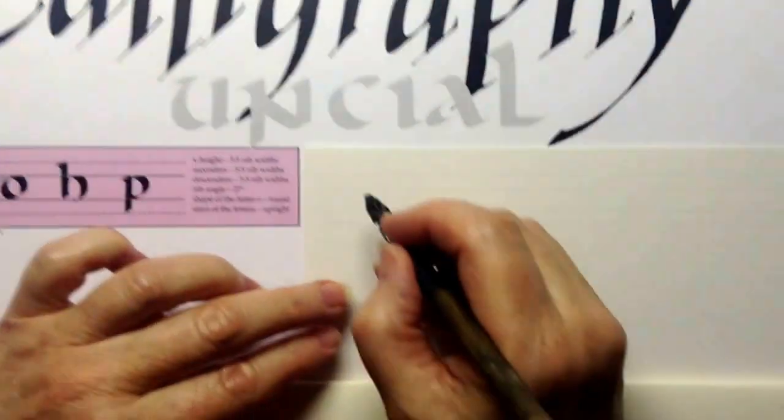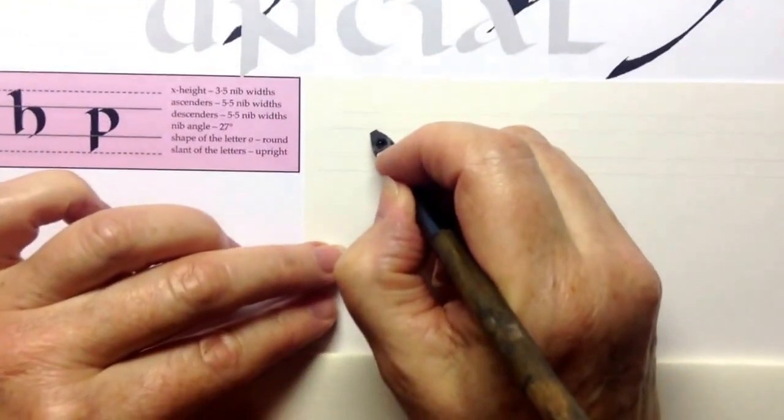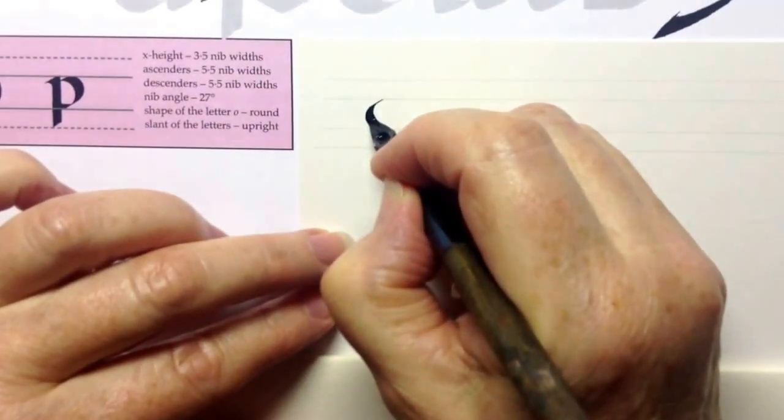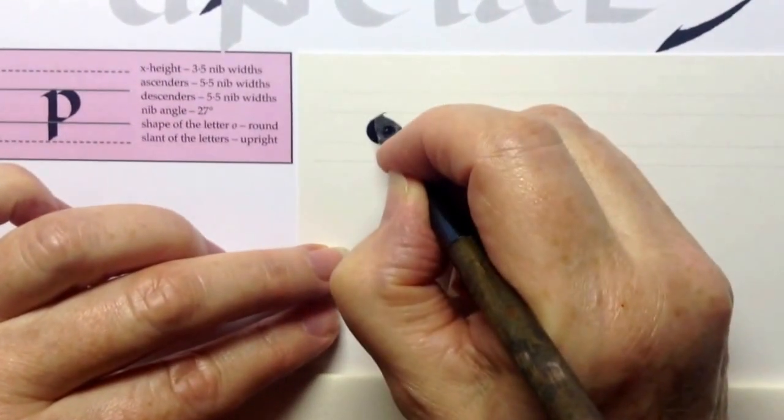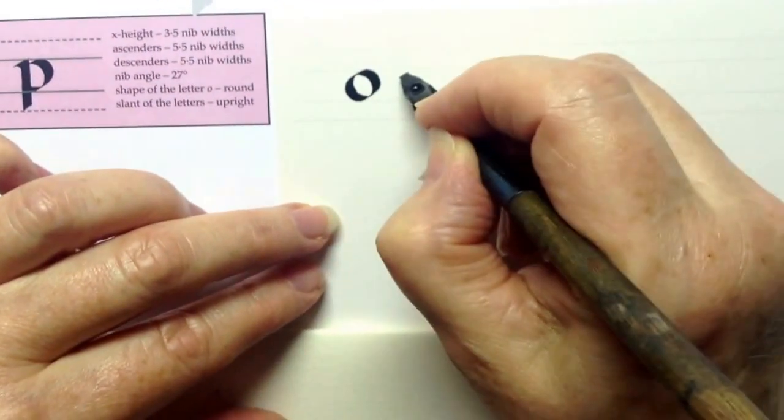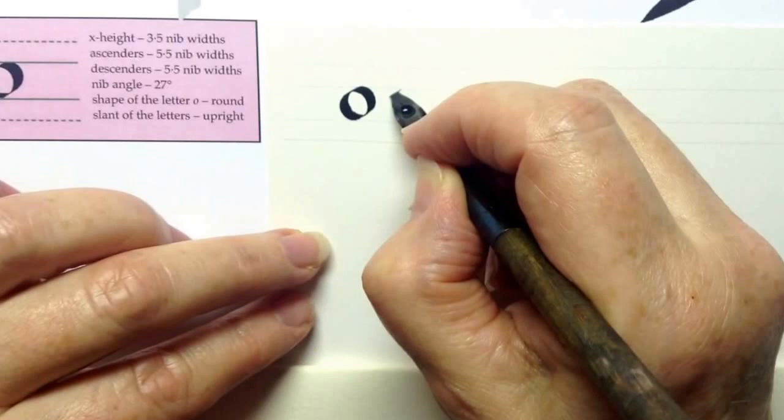These are the letter forms that are based on a round letter O. Remembering to keep your pen at 27 to 30 degrees, a nice round letter O should give you within it